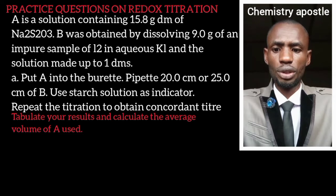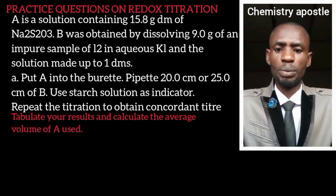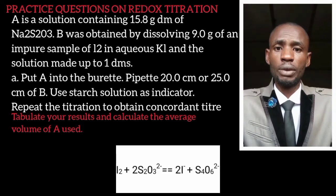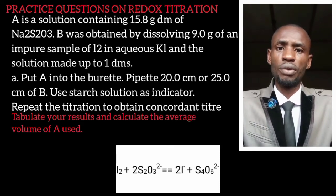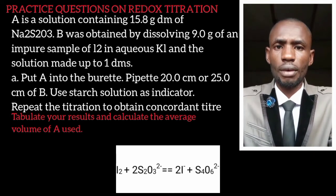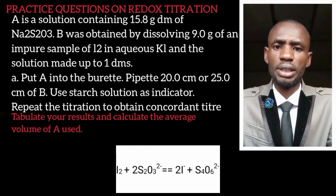A is a solution containing 15.8 grams per dm³ of sodium thiosulfate. B was obtained by dissolving 9.0 grams of an impure sample of iodine. Our A will be filled into the burette and we are going to pipette our B. B is our iodine and A is our sodium thiosulfate. You can see the equation for the reaction on the screen. At the end of these calculations, I'm going to show the titer values that we obtain from this titration.